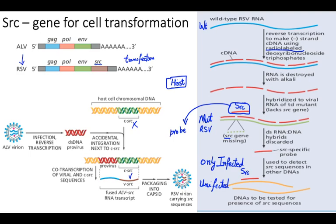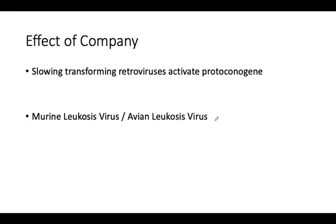Viral Sarc protein production is what changes Avian Leukosis Virus into Rous Sarcoma Virus. So from this one slide we identified many things: Avian Leukosis Virus is slowly tumorigenic; Rous Sarcoma Virus is highly tumorigenic. We also identified certain portions of sarcoma-related regions on the host genome. It is basically the activity state of a proto-oncogene that decides the fate of a cell.